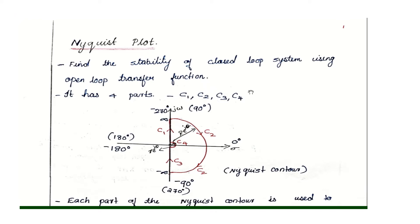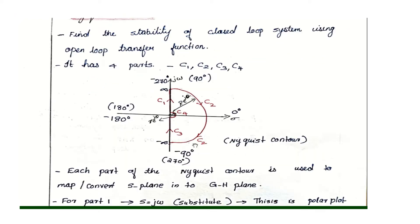The Nyquist plot uses the Nyquist contour. The Nyquist contour has four parts. The first part is C1, which goes to infinity. The second part is C2, which covers the right half plane from plus infinity to minus infinity. The third part is C3, from minus infinity to zero. The fourth part is C4.